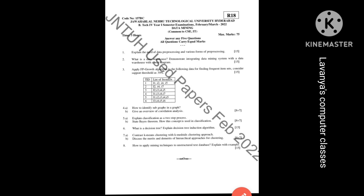The fifth question: A bit is explain classification as a two-step process, and B bit is state Bayes theorem and how this concept is used in classification. This is a 15 marks question.